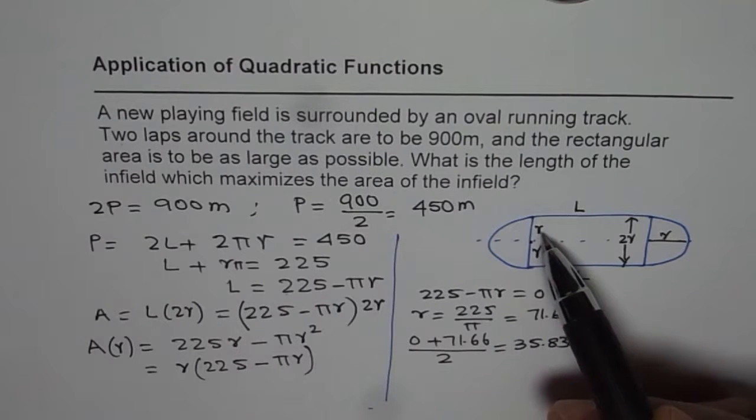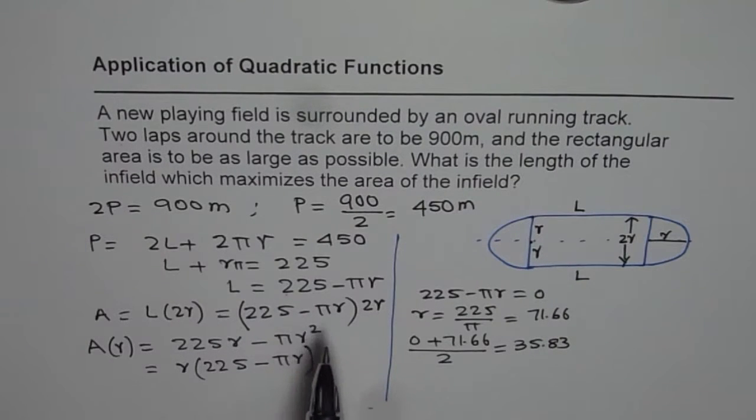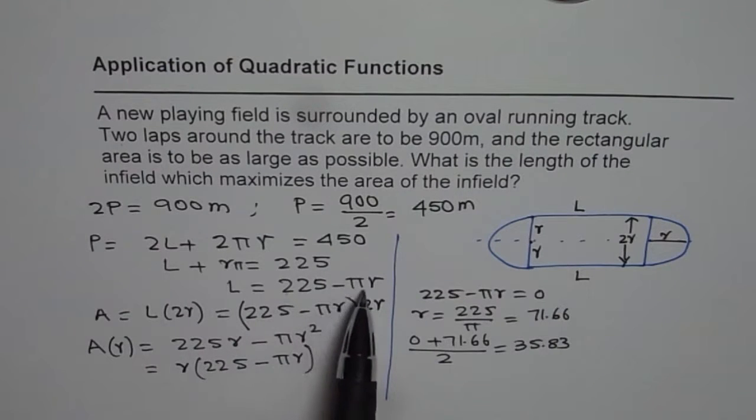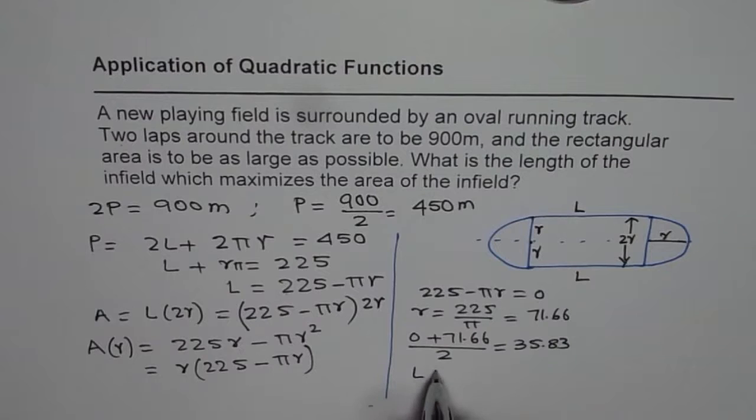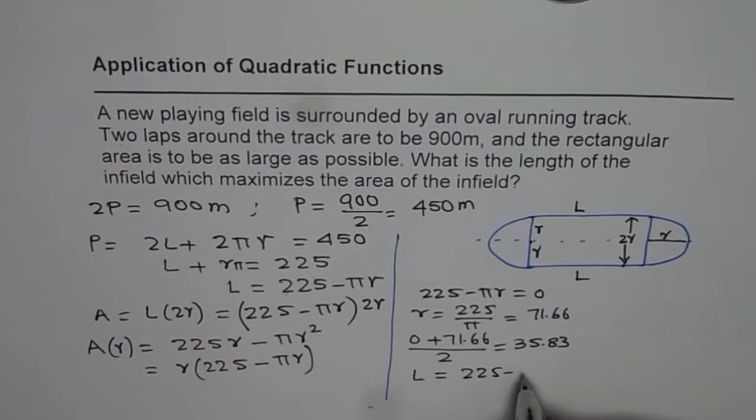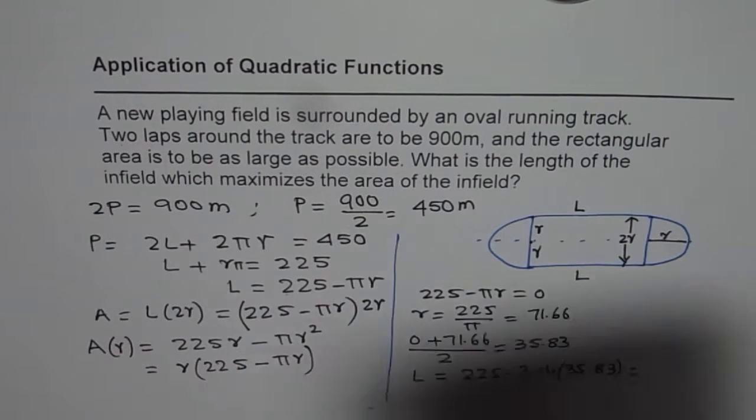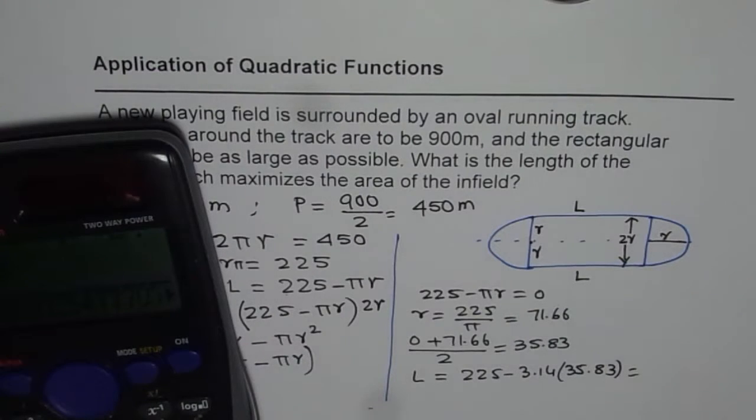So that is the value of R and we know length is 225 minus πR and therefore L equals to 225 minus 3.14 times 35.83 and that is equals to, so I'll multiply this by 3.14 and then take away 225 and use negative sign of this and we get this as 112.4.